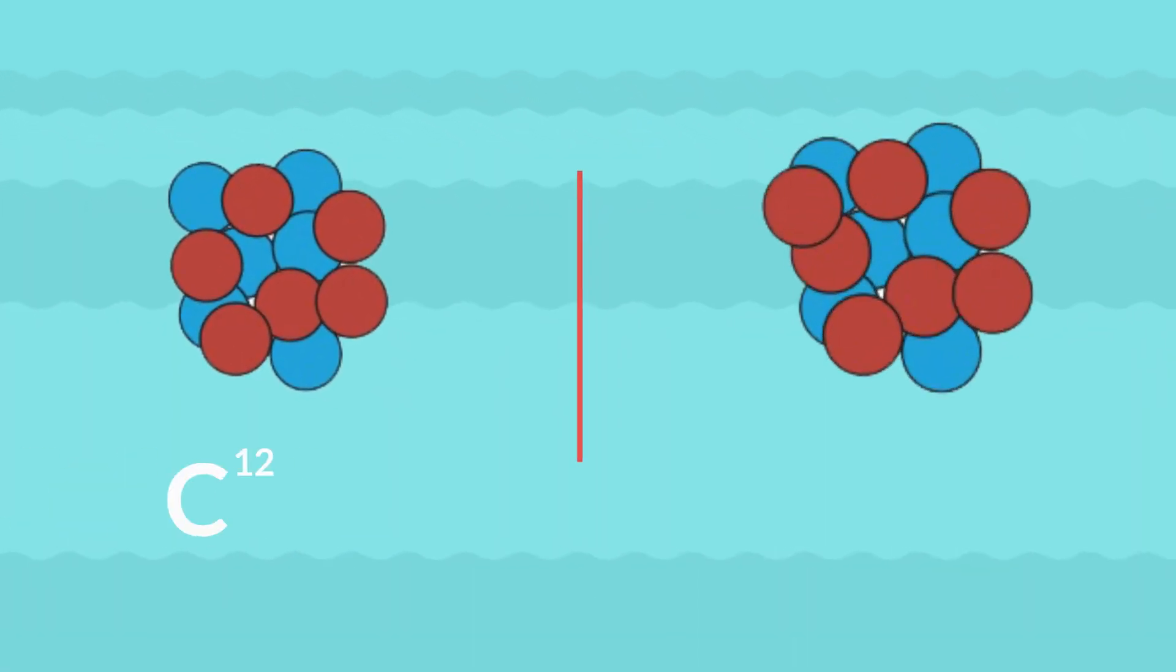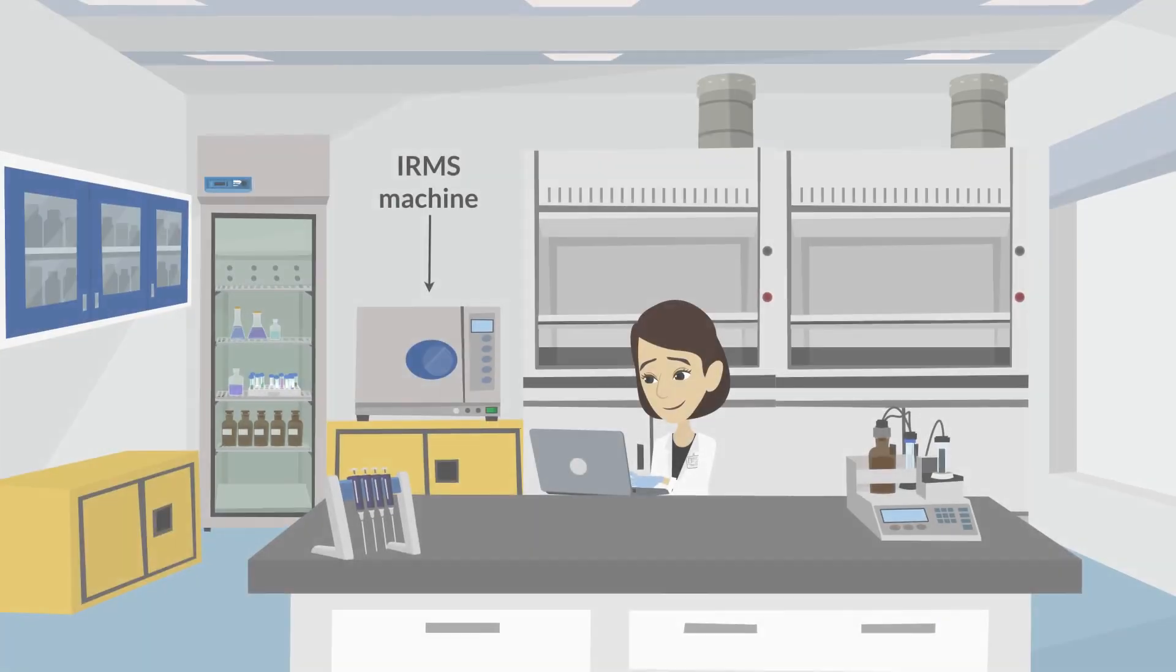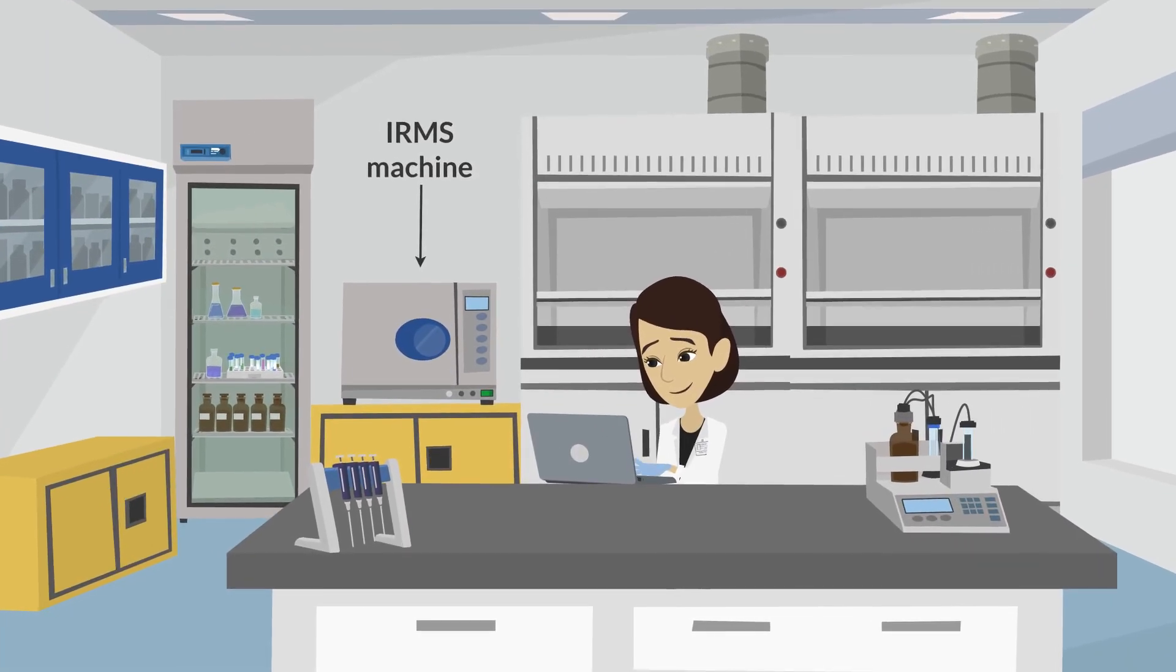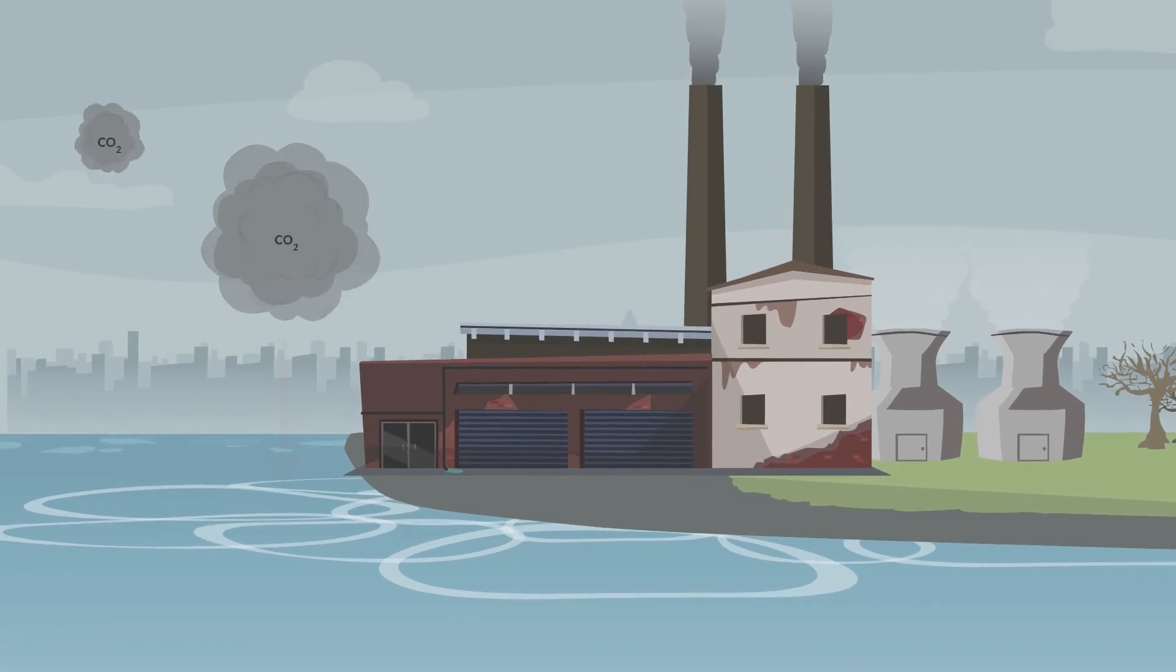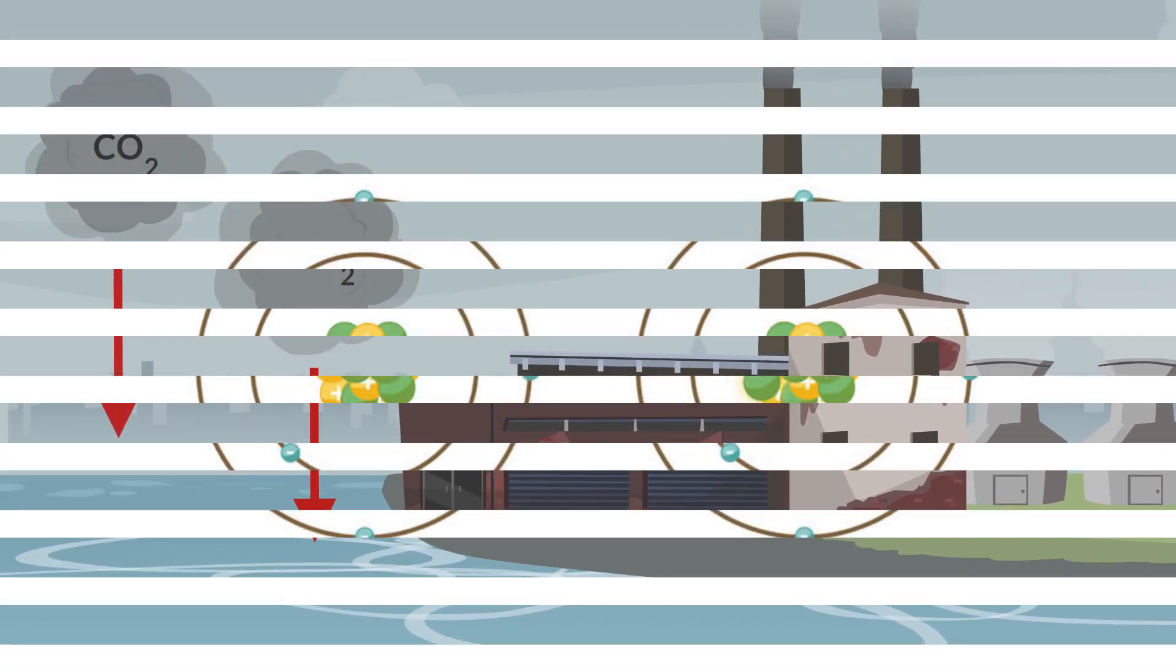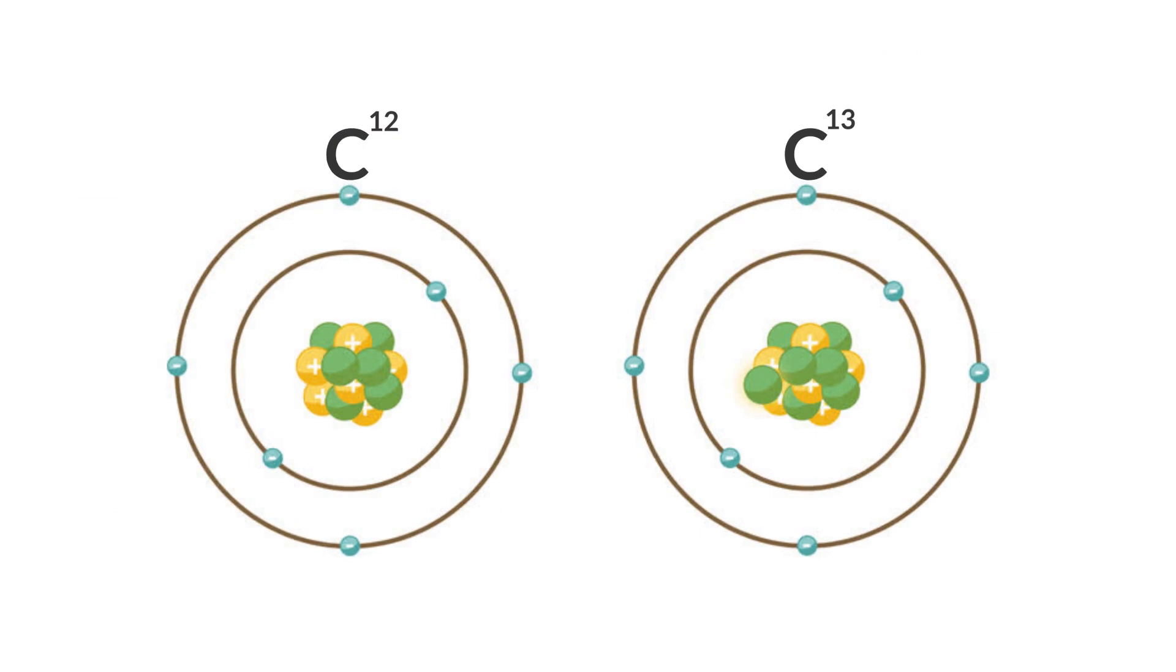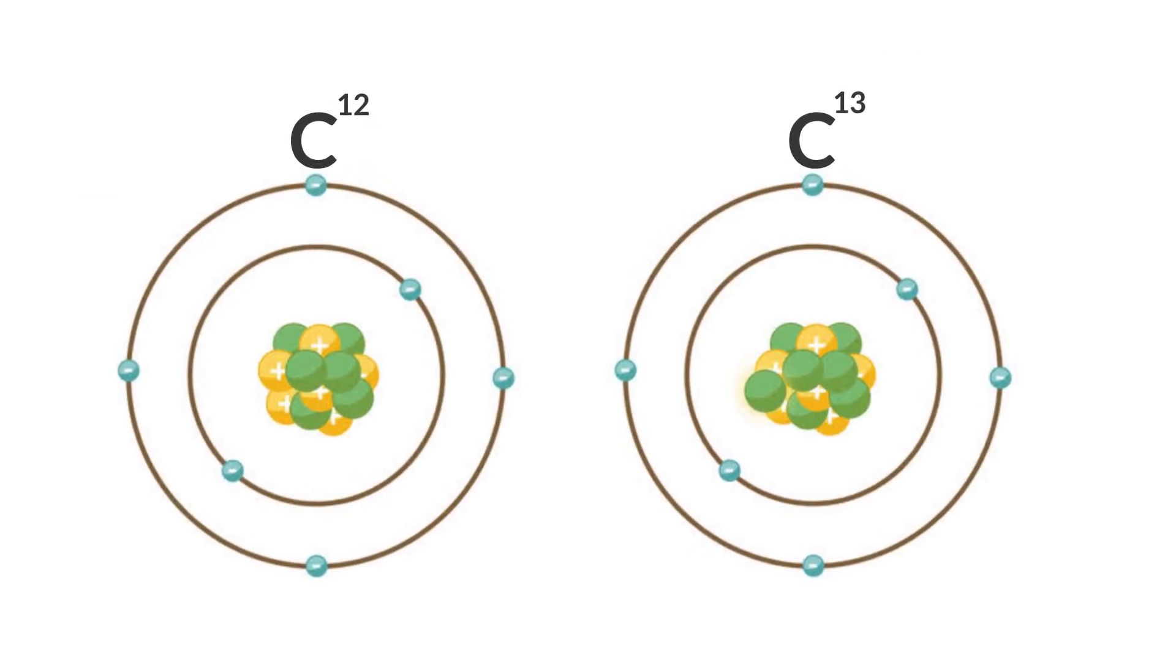By studying ratios of two stable carbon isotopes, carbon-12 and carbon-13, Susan can identify movements of carbon-13, the rarer carbon isotope. This isotope often follows the fossil fuel emitted carbon dioxide from the atmosphere into the ocean. Carbon-12 and carbon-13 act as markers that Susan can use to identify where the carbon in the shell comes from.